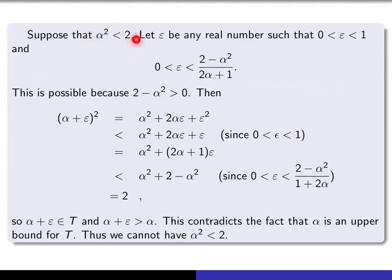First, suppose that alpha squared is smaller than 2. Let epsilon be any real number between 0 and 1, with the property that it lies between 0 and the quantity (2 − alpha²) / (2·alpha + 1). Our assumption that alpha squared is smaller than 2 says that 2 minus alpha squared is positive, so this bound is positive and we can find such an epsilon. What I want to show is that with this choice of epsilon, (alpha + epsilon) squared is still smaller than 2 — giving a number bigger than alpha in T, contradicting alpha being an upper bound.